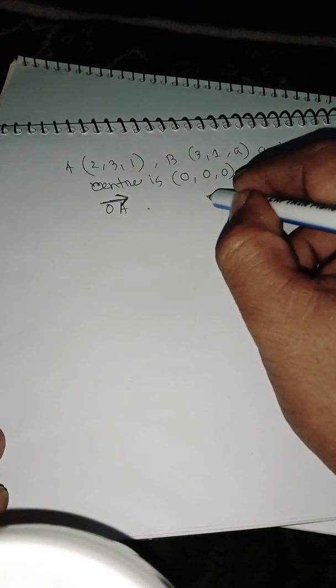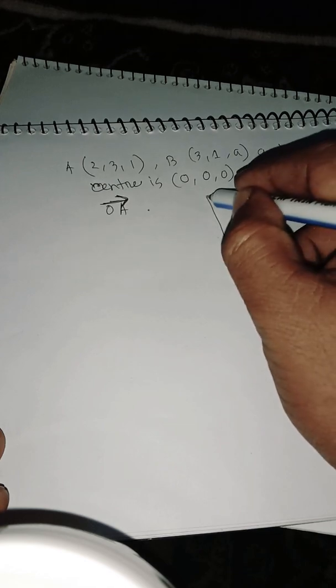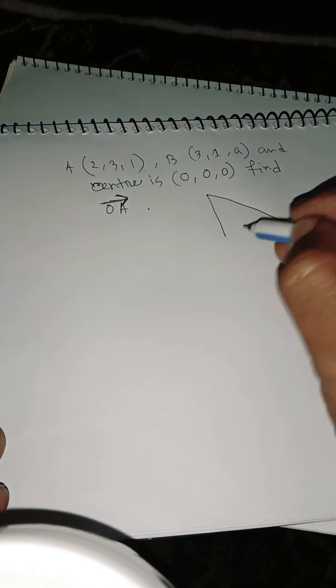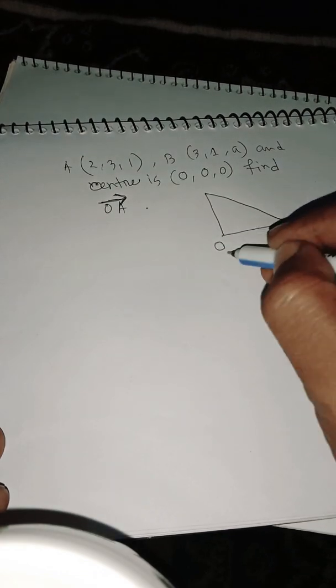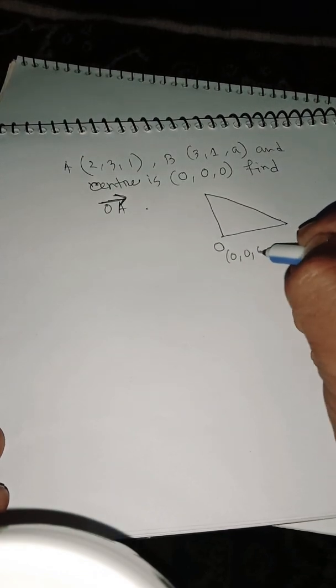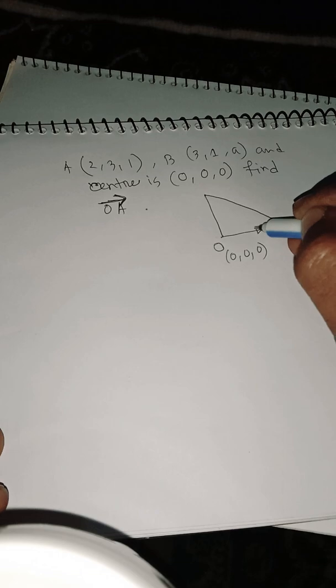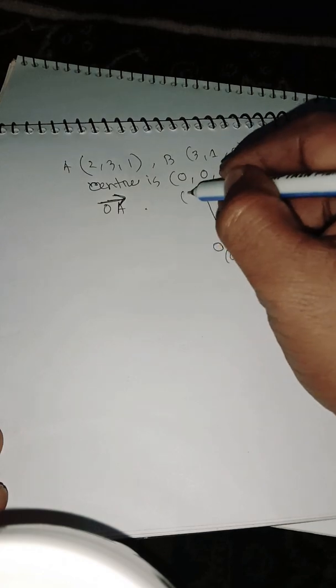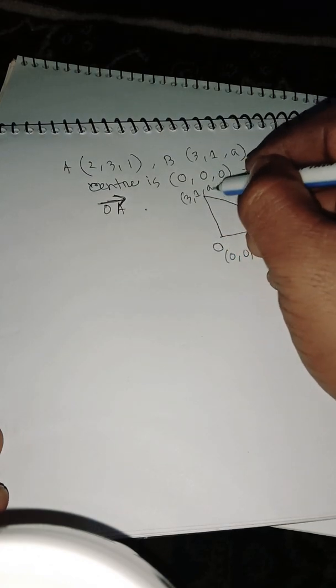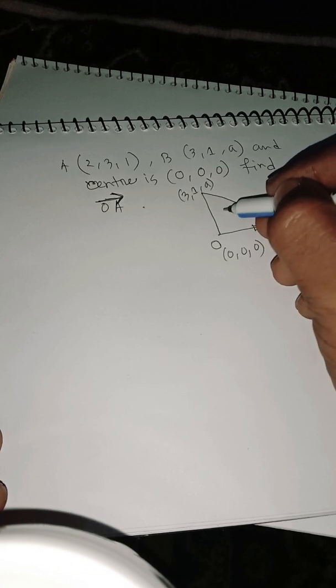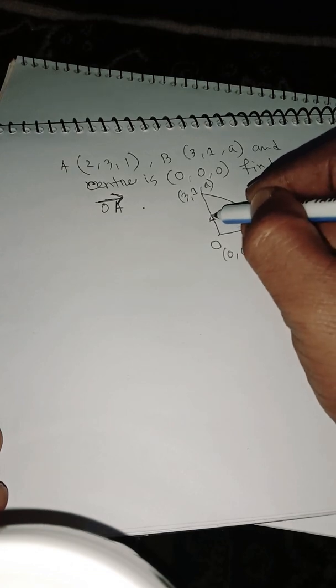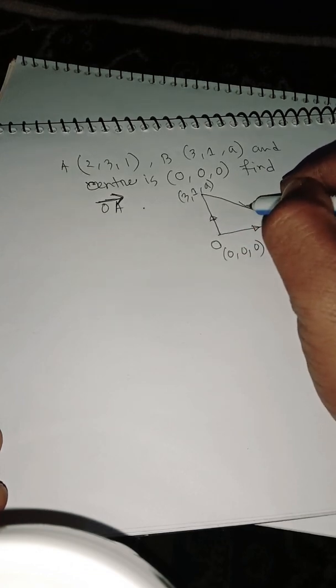Here is O at (0,0,0). Here is A, so A is (2,3,1). Here is B at (3,1,a). And here is another arrow.